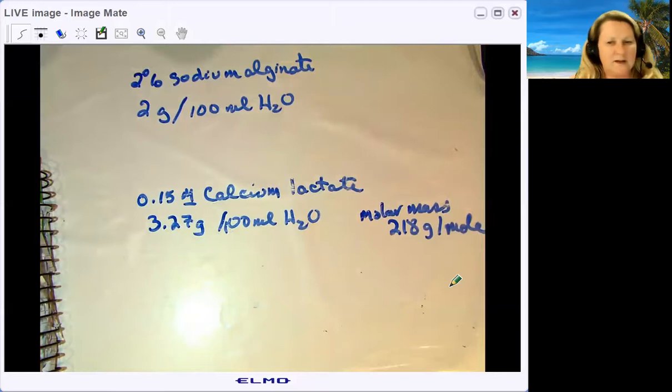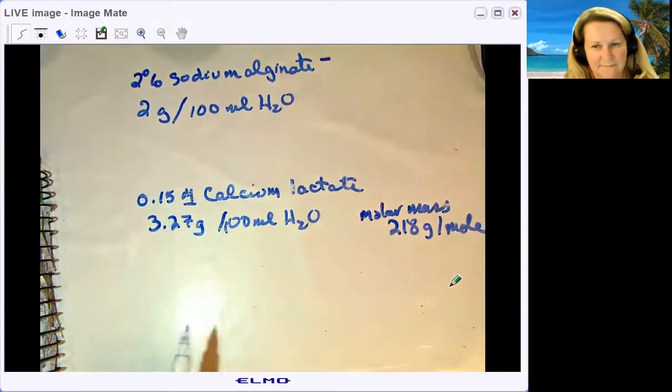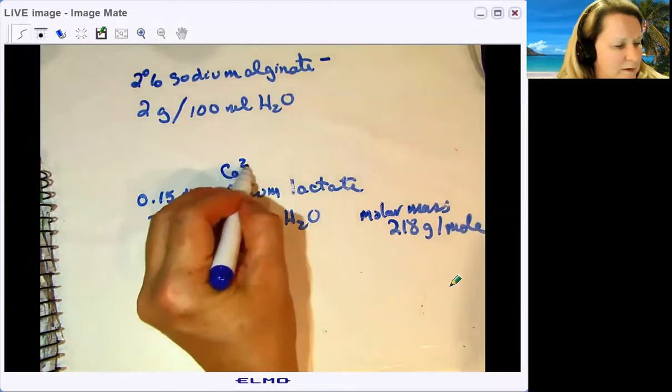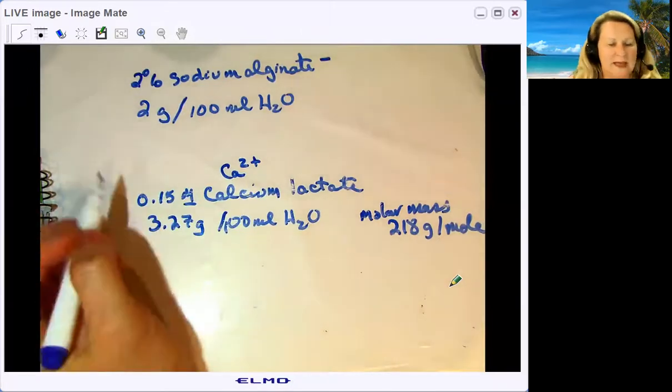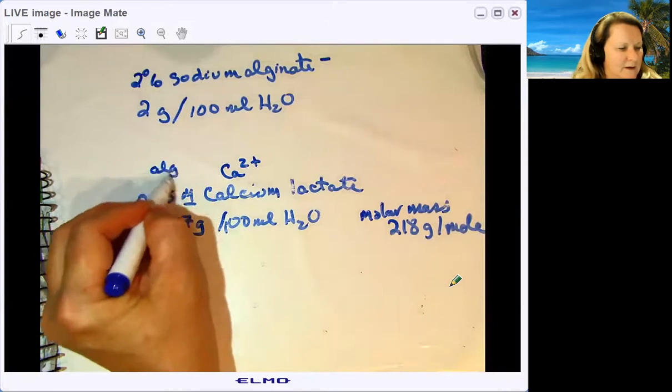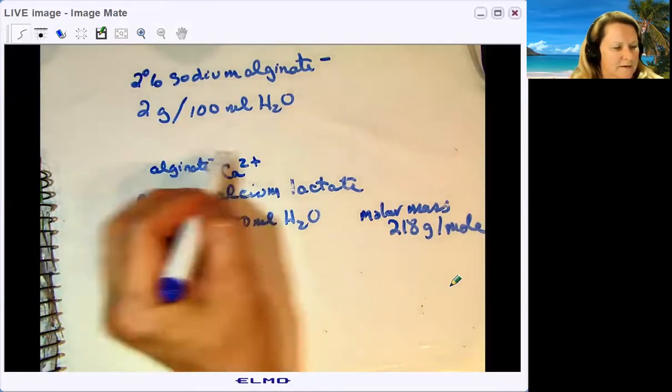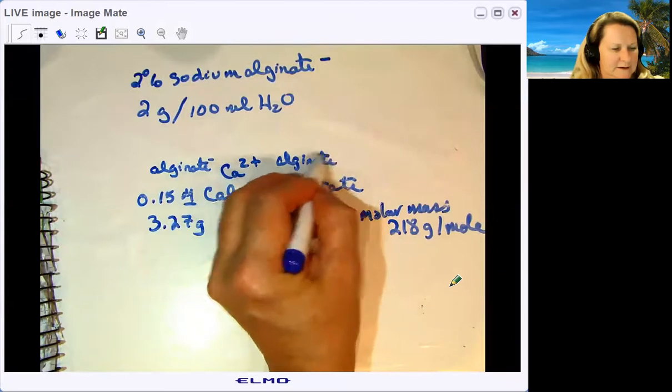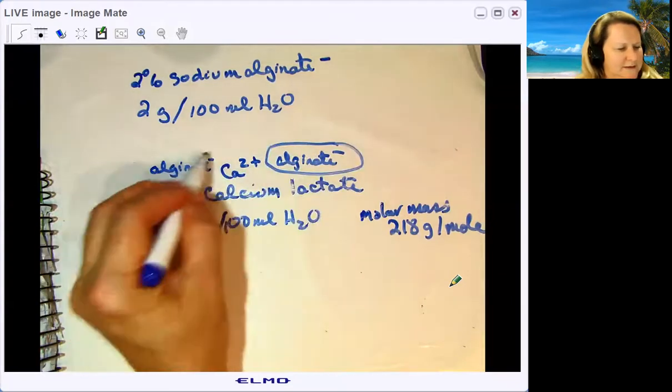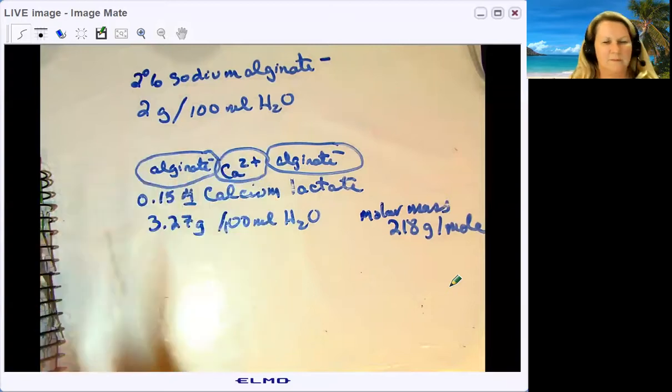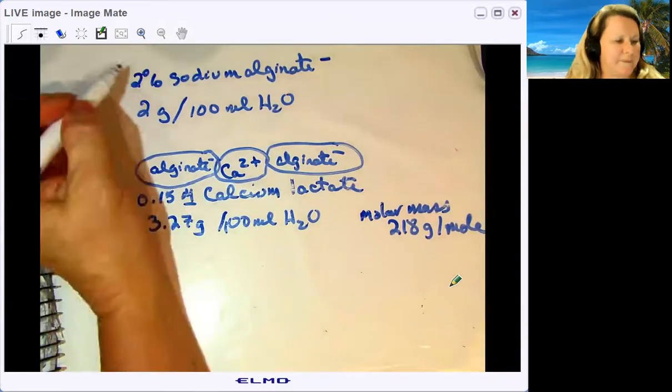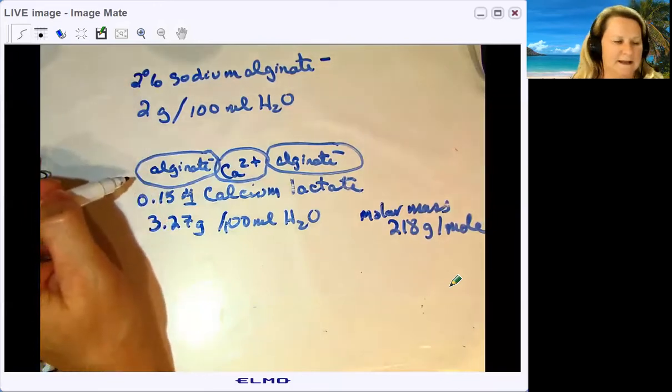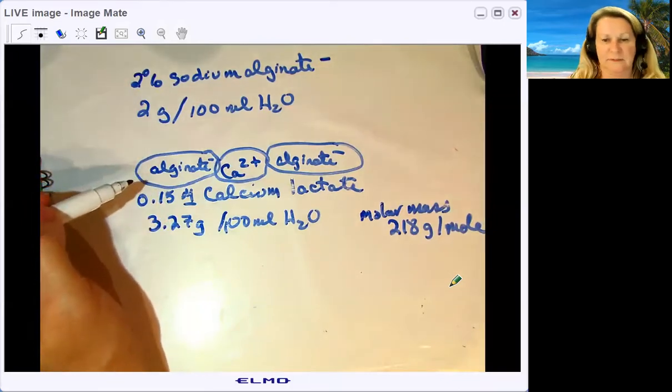What the sodium alginate and calcium lactate are going to do: Alginate is a negative ion. The calcium lactate in water dissociates and produces calcium ions. Every calcium ion will bond with two alginate ions. It's not exactly a polymerization reaction, but this is what causes the spheres to form. When you drop the alginate into the calcium lactate, you'll see it start to polymerize.